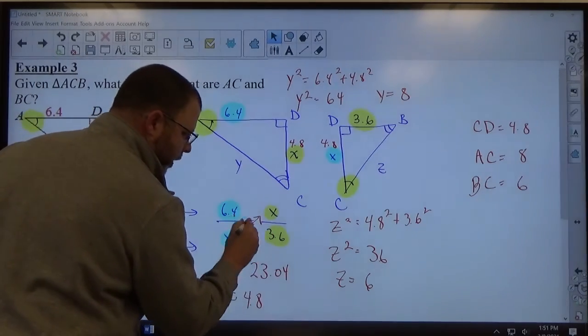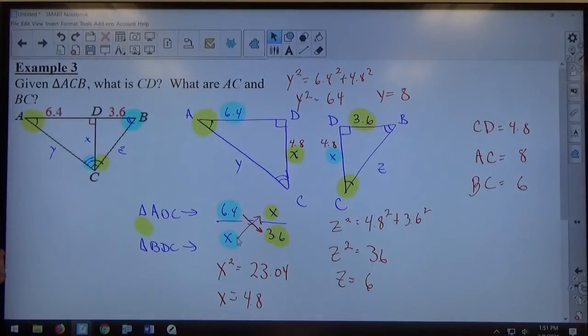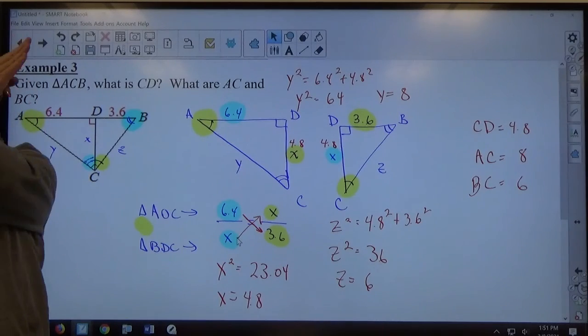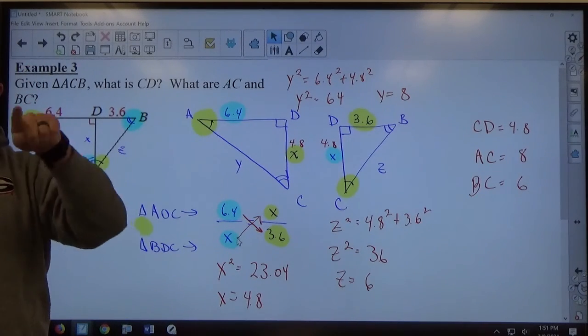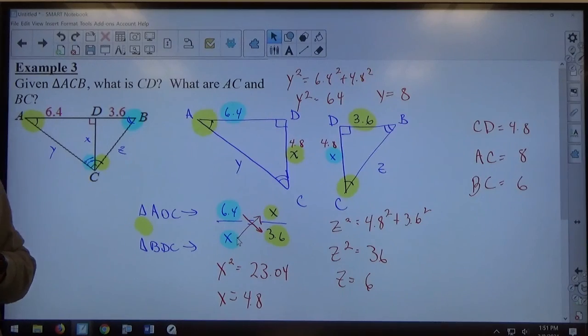Once you get your proportion created, the cross multiplication gets you the simplified expression without fractions, and then you solve them.